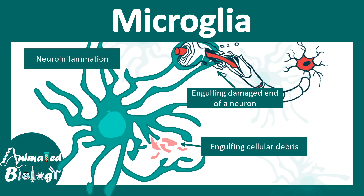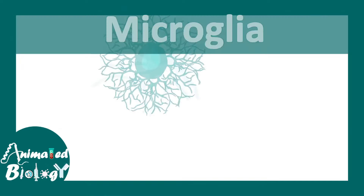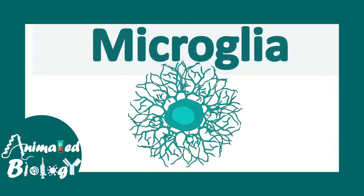To summarize: oligodendrocytes are present in the CNS; Schwann cells are in the PNS. Oligodendrocytes myelinate multiple axons; Schwann cells myelinate only one axon. Oligodendrocyte progenitors come from neuronal precursors, whereas Schwann cell precursors come from neural crest cells.